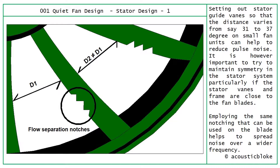Coming back to stator design: applying the same principles used on blades to the stators helps control noise from these elements. Setting stator vane angles so that the distance varies — for example, from 31 to 37 degrees on a small fan unit — helps reduce noise impulses, as the regularity of stator blade positioning can create a pulsing noise as blades pass. It is important to maintain symmetry in the stator system, particularly when stator vanes are close to the blade. The same notching used on blades can be employed on stators to spread noise over a wider frequency.